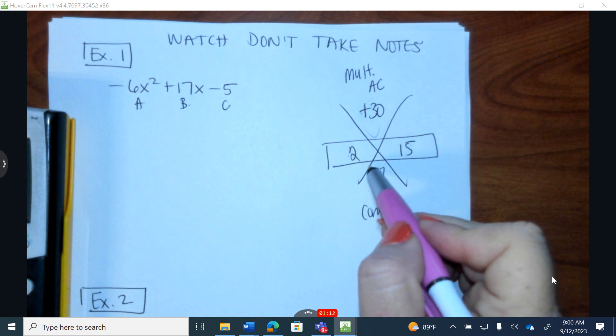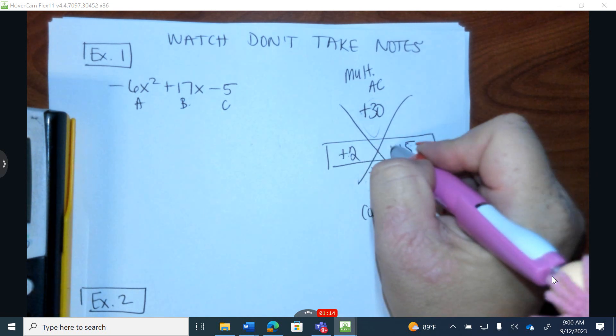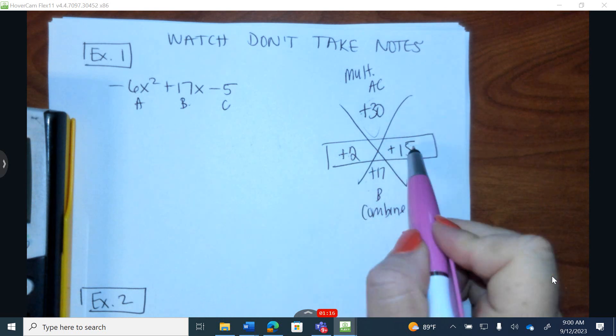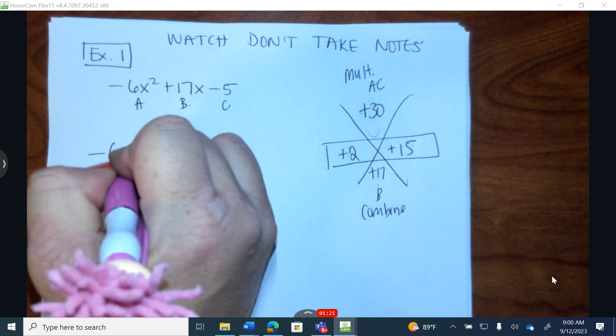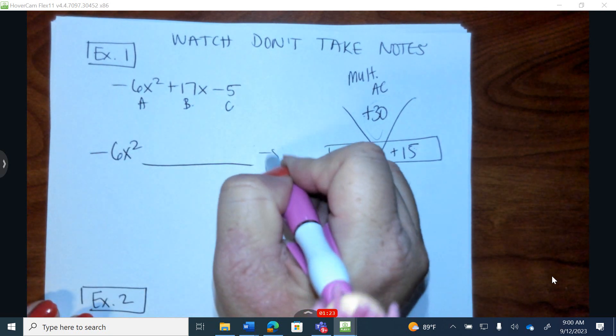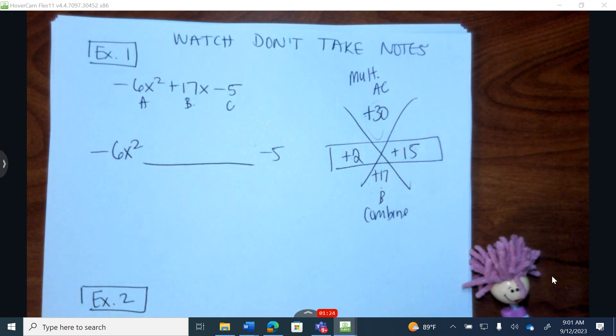Now in order to combine these and get a positive 17, they both have to be positive. They multiply to equal positive 30. They combine to give you 17. So I'm going to write this down, leaving a big blank here.